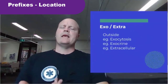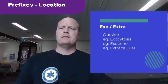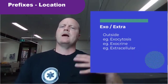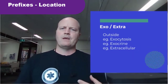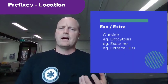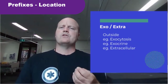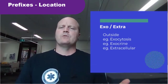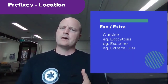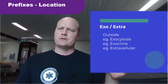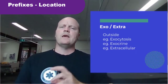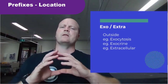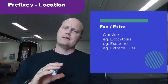Then exo and extra means outside. So extracellular would be substances that are outside the cell. Exocrine are glands that excrete things outside. And exocytosis — exo means outside, cyte means cell, and osis is a process — so exocytosis would be the process of exporting things outside a cell.